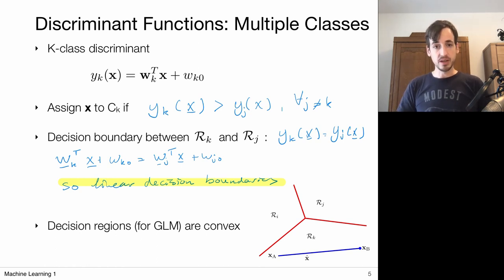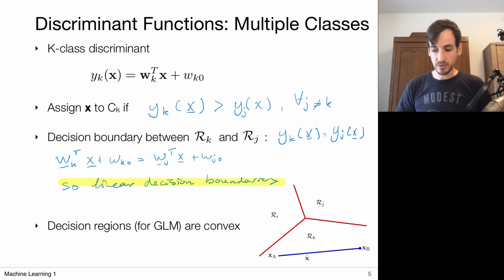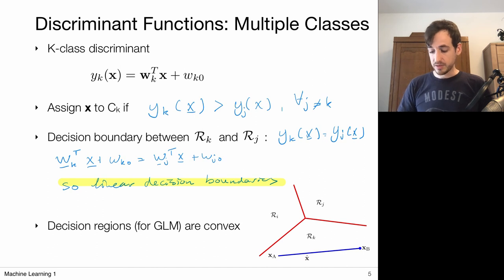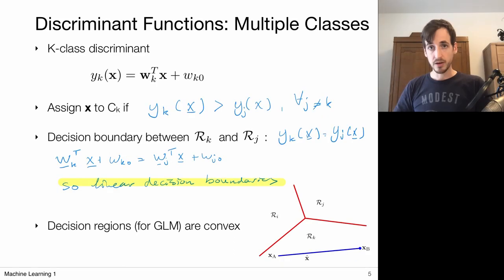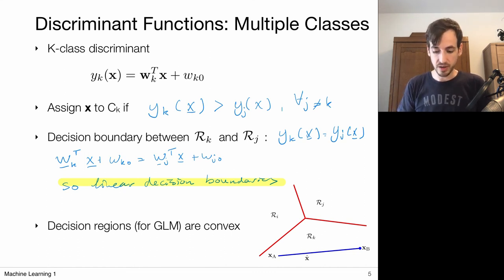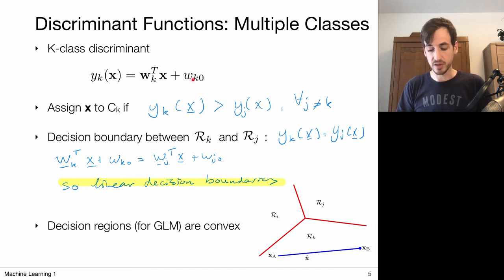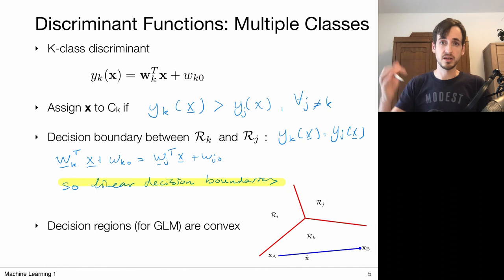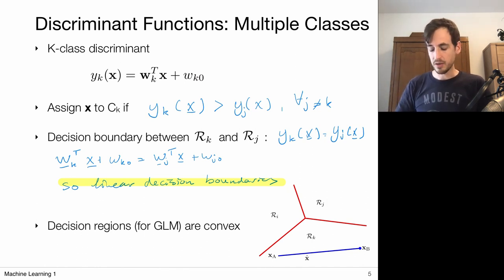A nice property of generalized linear models is that the decision regions are convex. This means that if I take two points xₐ and x_b within one region, then every point on the line connecting them also belongs to that same class. This is an interesting property that may be useful when doing further analysis of these classifiers. So in this video we gained understanding of discriminant functions, focusing on generalized linear models: the orientation of the decision surface via W, the distance from the origin via W₀, and y(x) as the distance of a point to the decision surface.